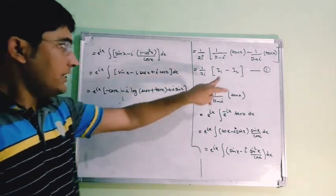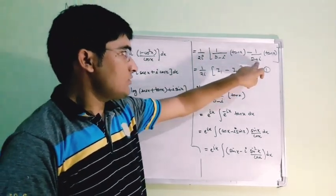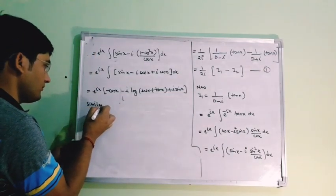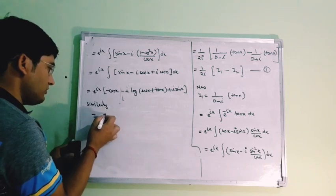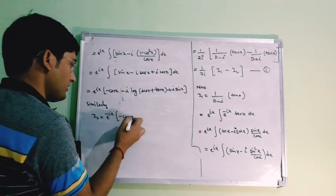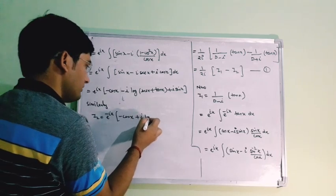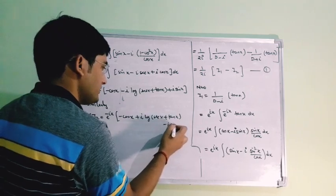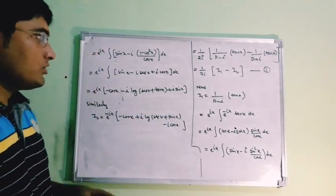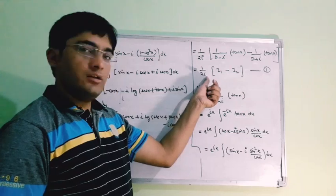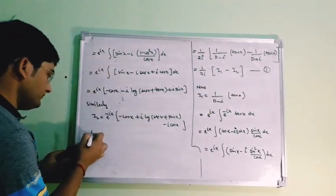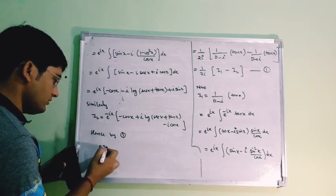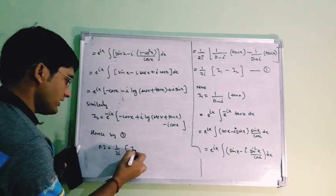For I₂, we replace i by −i in the expression for I₁. So I₂ = e^(−ix)[−cos(x) + i·log|sec(x)+tan(x)| − i·sin(x)]. Now the particular integral is (1/2i)(I₁ − I₂), from equation 1.